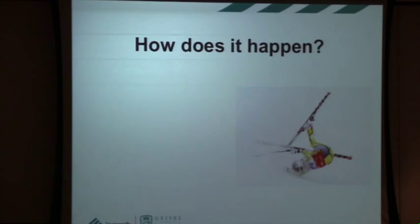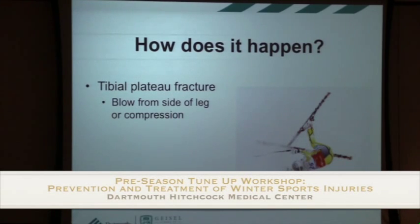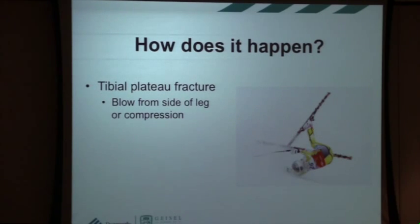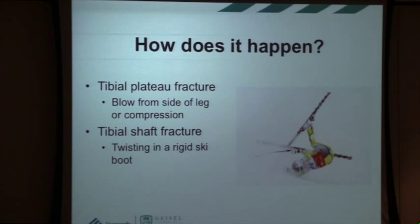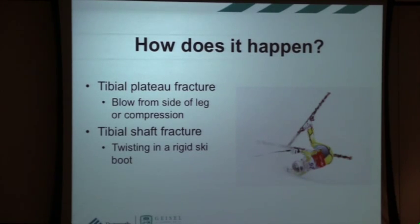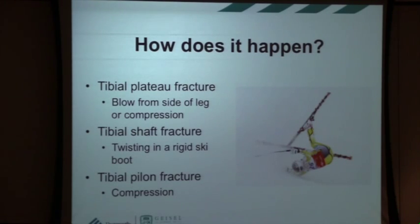How does it happen? Often it's with a fall or crash — sometimes relatively low-energy, but often higher-energy. Tibial plateau fractures are typically from a blow to the side of the leg or compression; going fast enough, even the valgus moment — the bending of the knee — can create enough force for a fracture. Tibial shaft fractures are easier to understand: if your foot is in a rigid ski boot and you twist through the ski, that energy travels up and creates a twisting fracture, often at the top of the ski boot. Pilon fractures are typically compression fractures from big jumps, which can also cause a calcaneus or heel bone fracture.